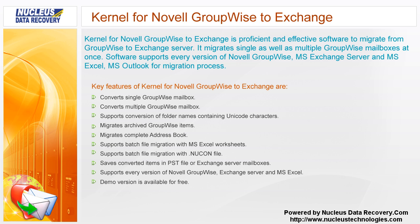Key features of Kernel for Novel GroupWise to Exchange include: converts single and multiple GroupWise mailboxes; supports conversion of folder names containing Unicode characters; migrates archived GroupWise items; migrates the complete address book; supports batch file migration with MS Excel worksheets and Nucon file; saves converted items in PST file or Exchange Server mailboxes; and supports every version of Novel GroupWise, Exchange Server, and MS Excel.